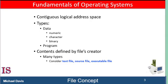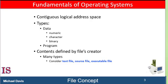A file is a named collection of related information that is recorded on secondary storage. From a user's perspective, a file is the smallest allotment of logical secondary storage. That is, data cannot be written to secondary storage unless they are within a file. Normally, files represent programs, both source and object forms, and data. Data files may be numeric, alphanumeric, or binary. Files may be freeform, such as text files, or may be rigidly formatted.